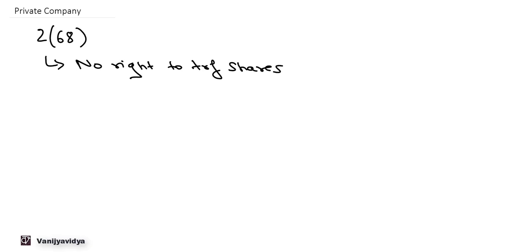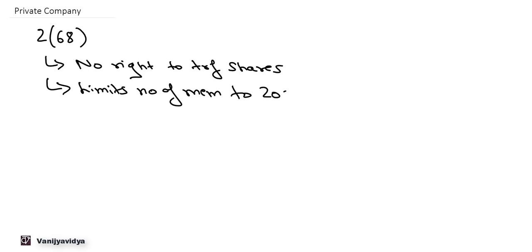A private company also limits the number of members to 200. That is, the total number of members or shareholders in the company should not exceed 200. If one or more persons are jointly holding a particular share, then that will be calculated as one member.